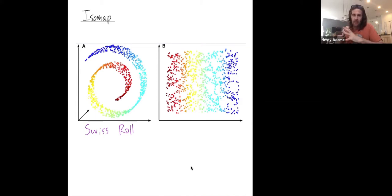Linear dimensionality reduction methods you should just think of as a projection of your data set down onto a linear subspace, something like a plane or a line or 3D subspace. So if I projected the Swiss roll down onto the purple plane, what would happen? Well, I would have some of these orange points collide with some of these teal points.